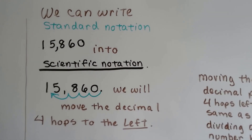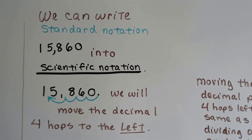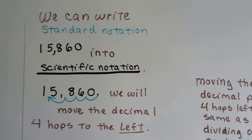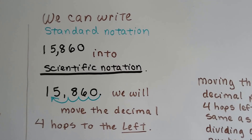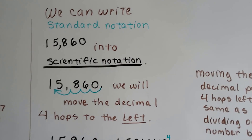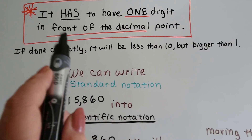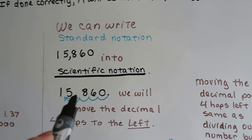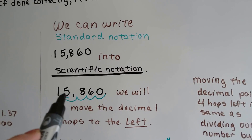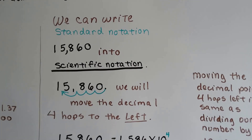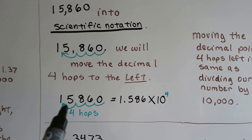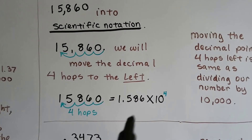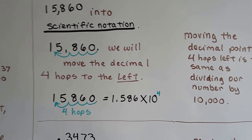We can also write standard notation into scientific notation, going the other way around. Standard notation is the way we write normally. So 15,860 — we move the decimal four hops to the left because it has to have one digit in front of the decimal. We can't put it here or here; it would go in between the 1 and the 5. By moving it those four hops, we now have 1.586 times 10 to the fourth power because we did four hops.